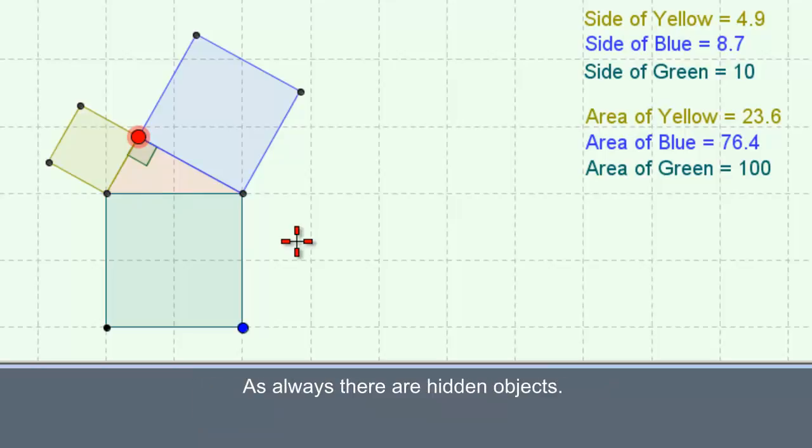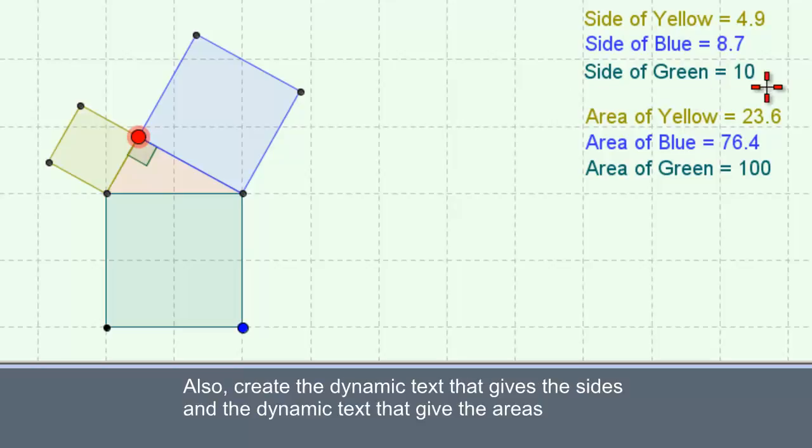As always, there are hidden objects. Also, you might as well create the dynamic text that give the sides and the dynamic text that give the area.